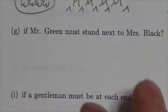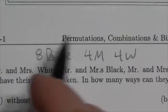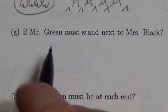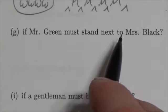Okay everybody, this is a question about a permutation with restrictions. The scenario we're looking at here is we've got four different couples, so there's eight people - four men, four women. The question specifically here says how many ways can we do this if Mr. Green must stand next to Mrs. Black.